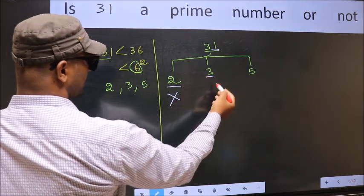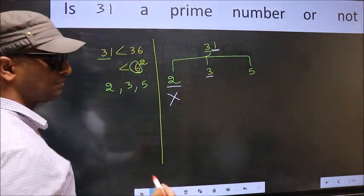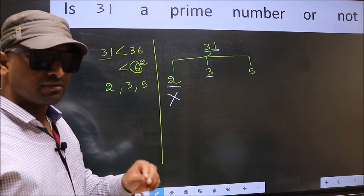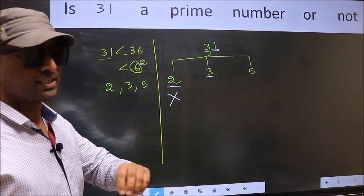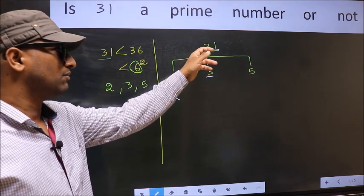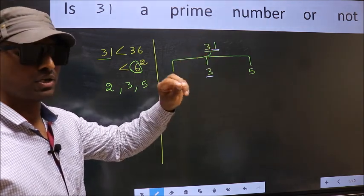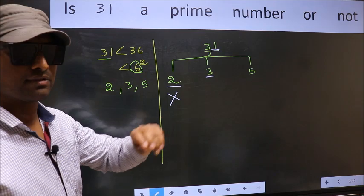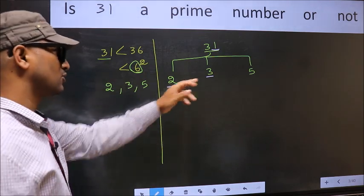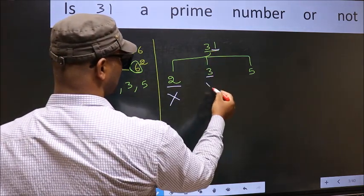Next number 3. To check divisibility by 3, we should add the digits: 3 plus 1, we get 4. And 4 is not divisible by 3, so this number is also not divisible by 3.